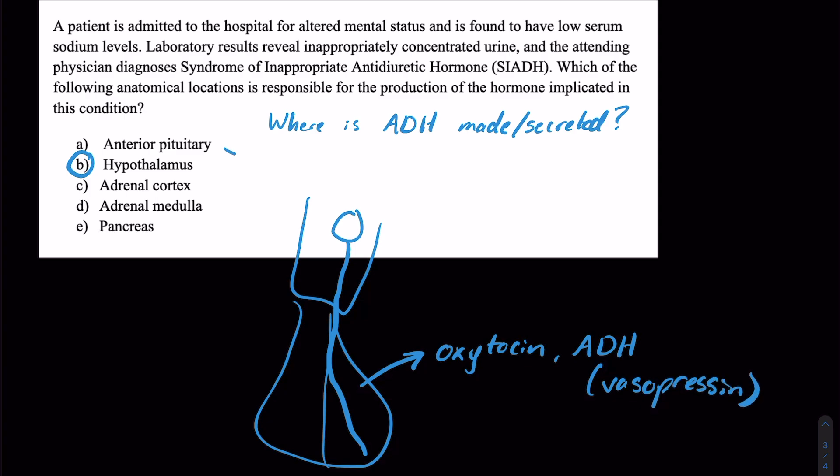Now let's go over the wrong answers. Anterior pituitary, that's primarily going to be our FLAT PIG mnemonic. And so F is going to be FSH, L is LH, A is ACTH, T is TSH, P is prolactin, and G is growth hormone.